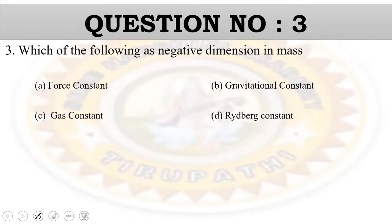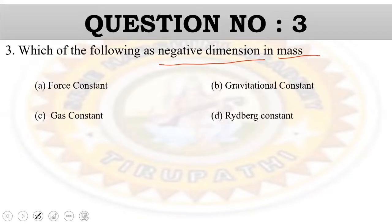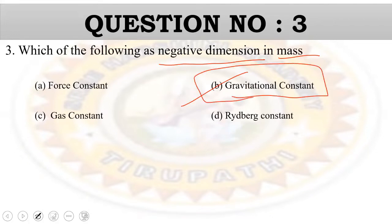Question number 3: Which of the following has negative dimensions in mass? The options are force constant, gravitational constant, gas constant, and Rydberg's constant. The answer is the gravitational constant, which has negative dimensions in mass. Third question completed.